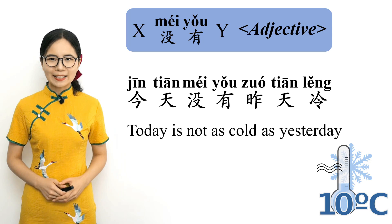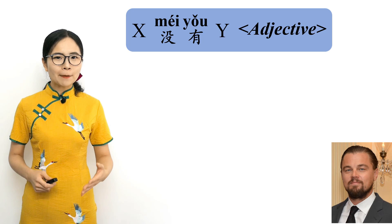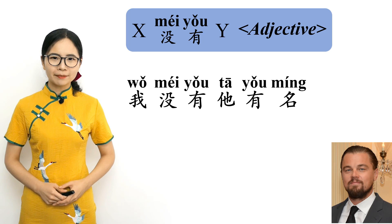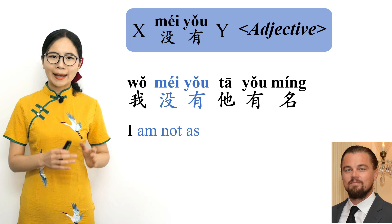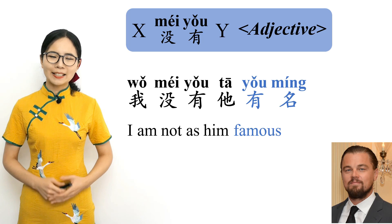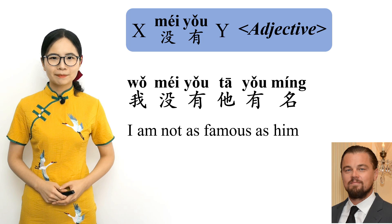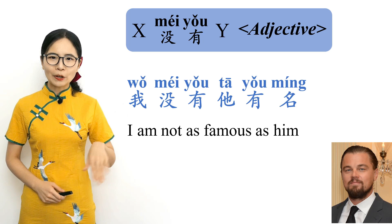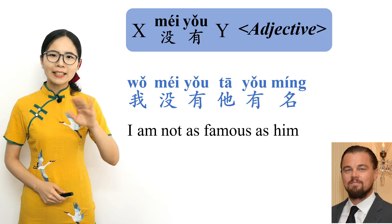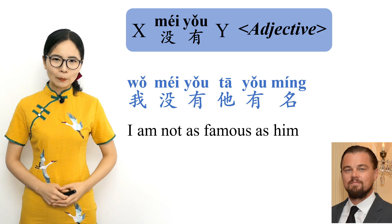I am not as famous as him: 我没有他有名. 我 means 'I,' 没有 means 'am not as,' 他 means 'him,' and 有名 is an adjective meaning 'famous.' Literally, 'I am not as him famous' — in other words, I am not as famous as him. Please repeat after me. 我没有他有名. I am not as famous as him.